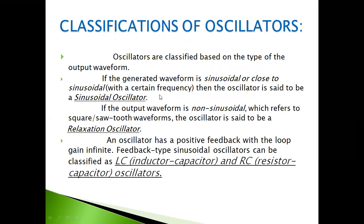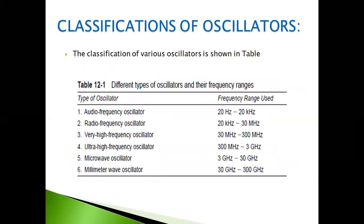Here I've given some classification of oscillators. We have classifications such as relaxation oscillator, LC oscillator, and RC oscillators. Clearly, based on the sinusoidal oscillator and the non-sinusoidal oscillator, they can be classified. Sinusoidal oscillators include LC oscillator and RC oscillator. L and C are the inductor and capacitor combination; RC is the resistor and capacitor combination type of oscillator.